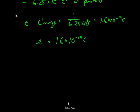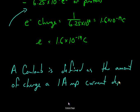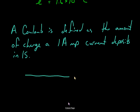And just to finish off, where does that number come from? A coulomb is defined as the amount of charge a 1 amp current deposits in 1 second. So if you have a 1 amp current flowing through a wire, 1 coulomb passes every second. So the base units for coulomb then would be the amp second. One amp second is one coulomb.